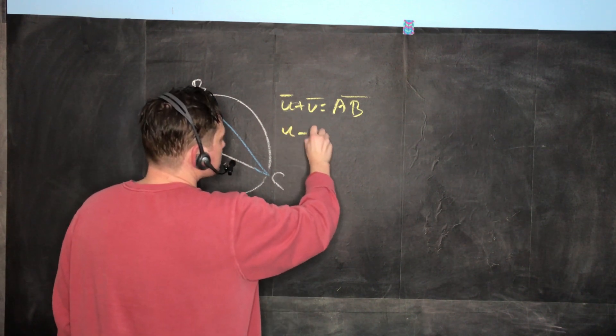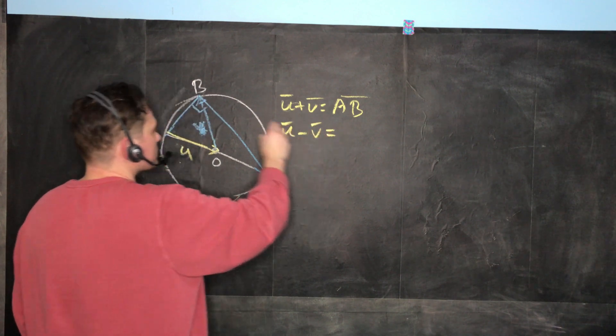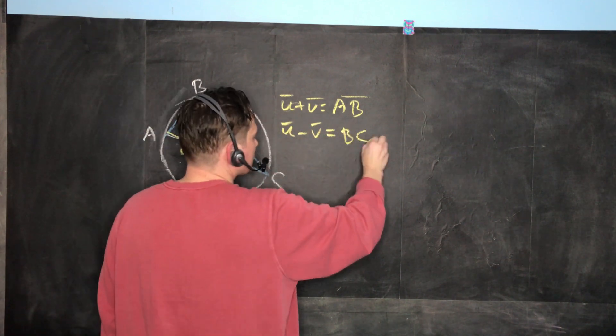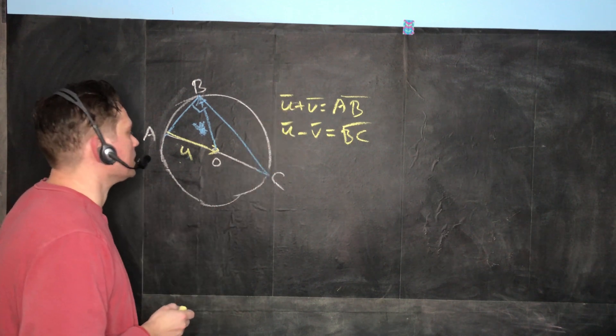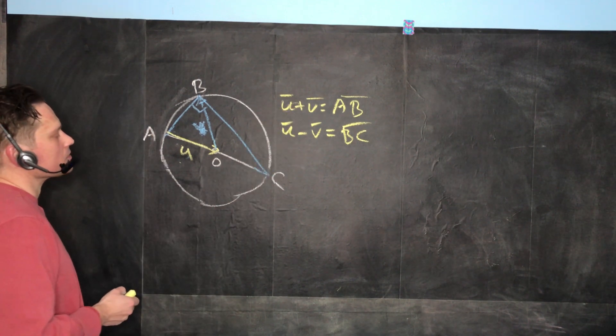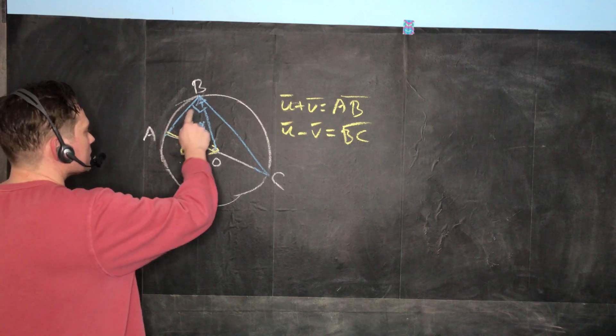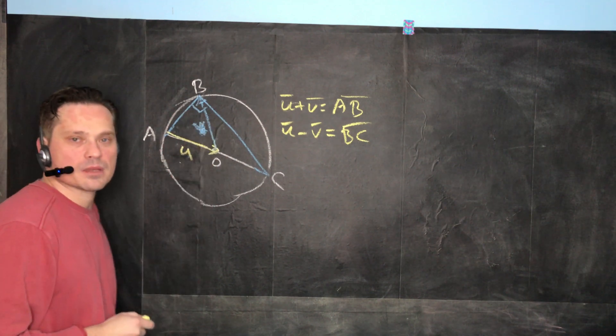In other words, U minus V would be this BC right here. So imagine that it's vector notation, so if you like little arrows instead of lines. Now, how can we use this? Well, to show that this is a 90 degree angle, we've got to show these two are perpendicular somehow.